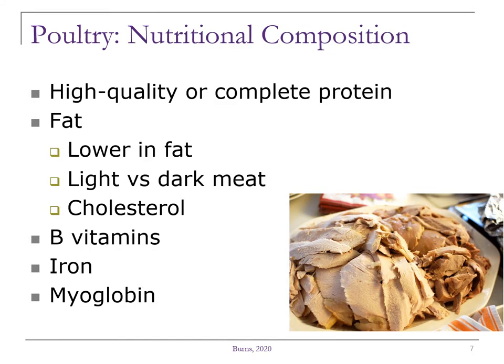When looking at the nutritional composition of poultry, we need to recognize again that it's a source of complete protein and the fat content will vary. The fat is located in the skin and just under the skin. If you are looking to have a lower fat piece of poultry, don't eat the skin — that's going to help quite a bit. The dark meat contains more connective tissue and thus a little higher fat content. Cholesterol is also present in poultry and about the same amount as found in other meats. Poultry is also a good source of the B vitamins as well as iron.